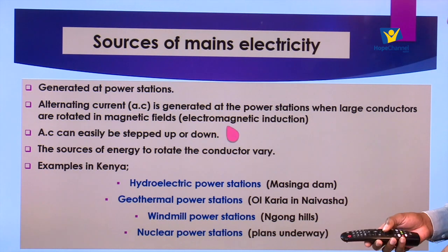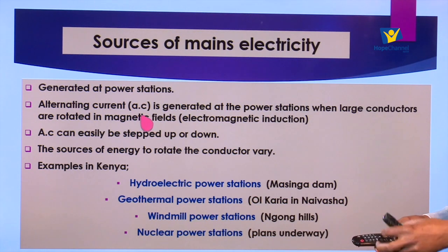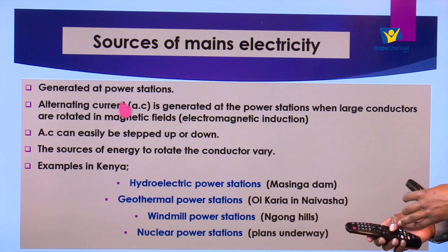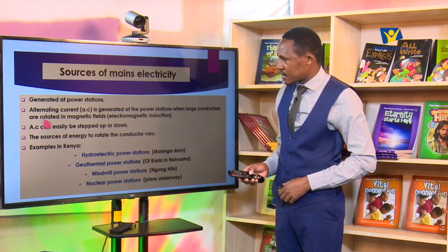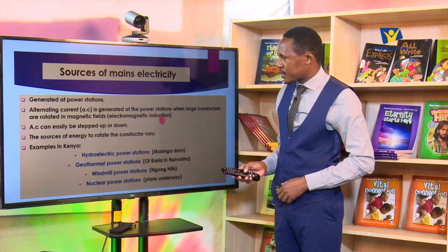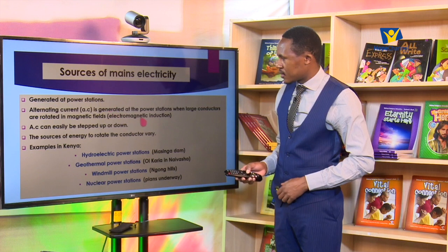Mains electricity is generated at the power stations. In form one we talked about the different sources of electricity. Primary sources cannot be reused once they are used; secondary sources can be recharged. Mains electricity commonly comes from power stations where an alternating current is generated when large conductors are rotated inside magnetic fields. The concept at the generating plants is called electromagnetic induction.